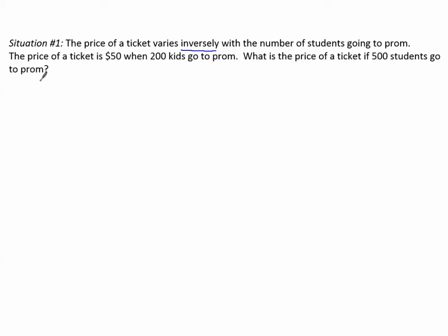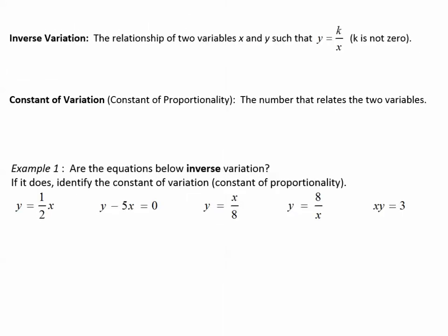To do this, we need to understand what it means to vary inversely. Inverse variation is the relationship of two variables x and y such that y equals k divided by x. Remember direct variation? Direct variation is y equals k times x. When we found the constant of variation for direct variation, we divided by x — the constant of variation was y divided by x. Inverse variation is when k gets divided by x, and k is not zero.